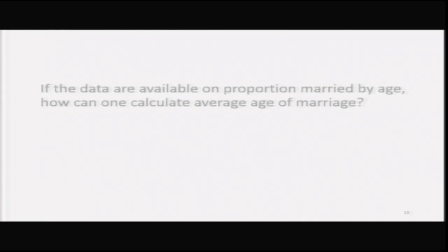Another question answerable by modeling: if data are available on proportion married by age — as census data provide for different age groups showing proportions unmarried, married, widowed, divorced, and separated — how can we calculate average age of marriage? The singulate mean age at marriage (SMAM) is one such way of calculating the average age of marriage in a population.